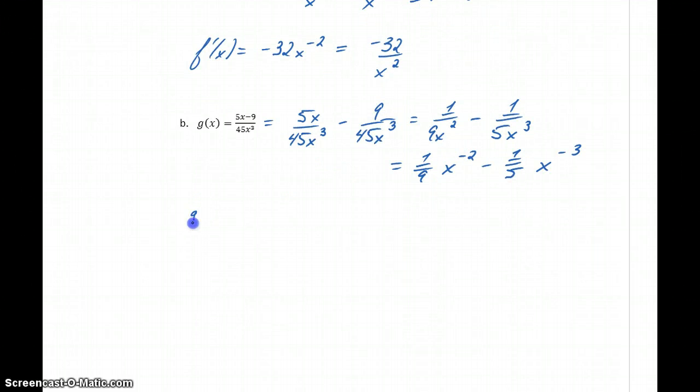Which would be 1 ninth times x to the negative 2 minus 1 fifth x to the negative 3. So again, each of these rewrites so that we get either a single power function or the sum and difference of multiple power functions, which we can apply these properties now that we've established. So this will become negative 2 ninths x to the negative 3 plus 3 fifths x to the negative 4.